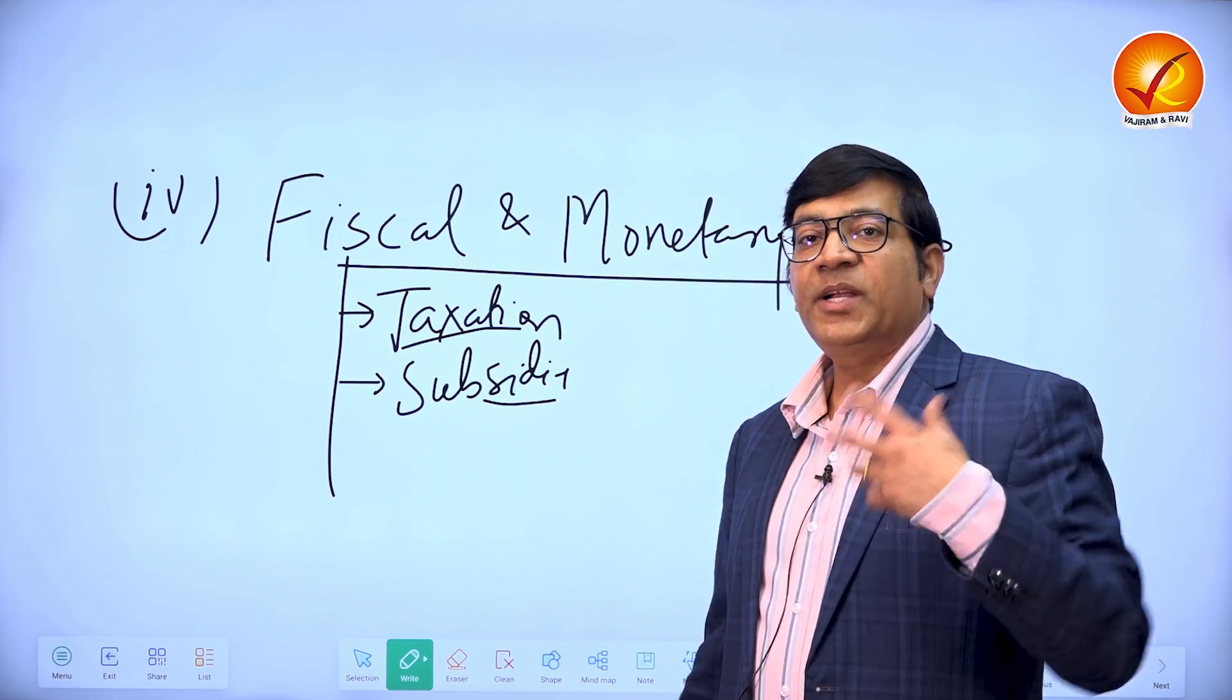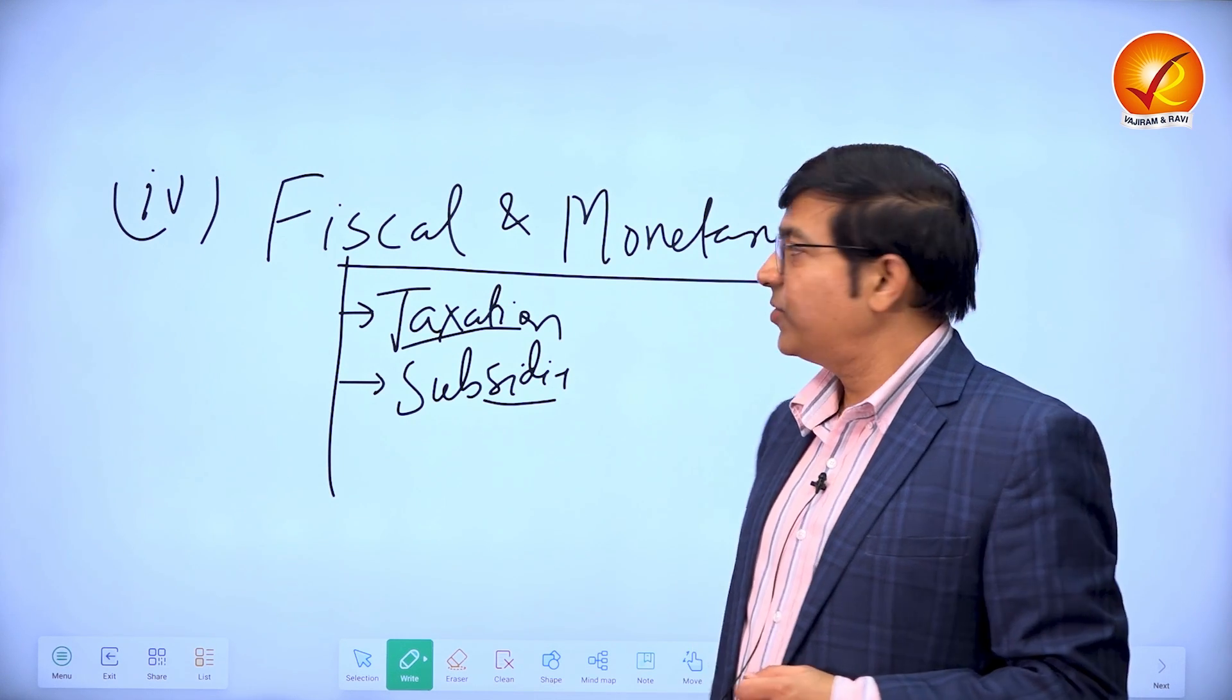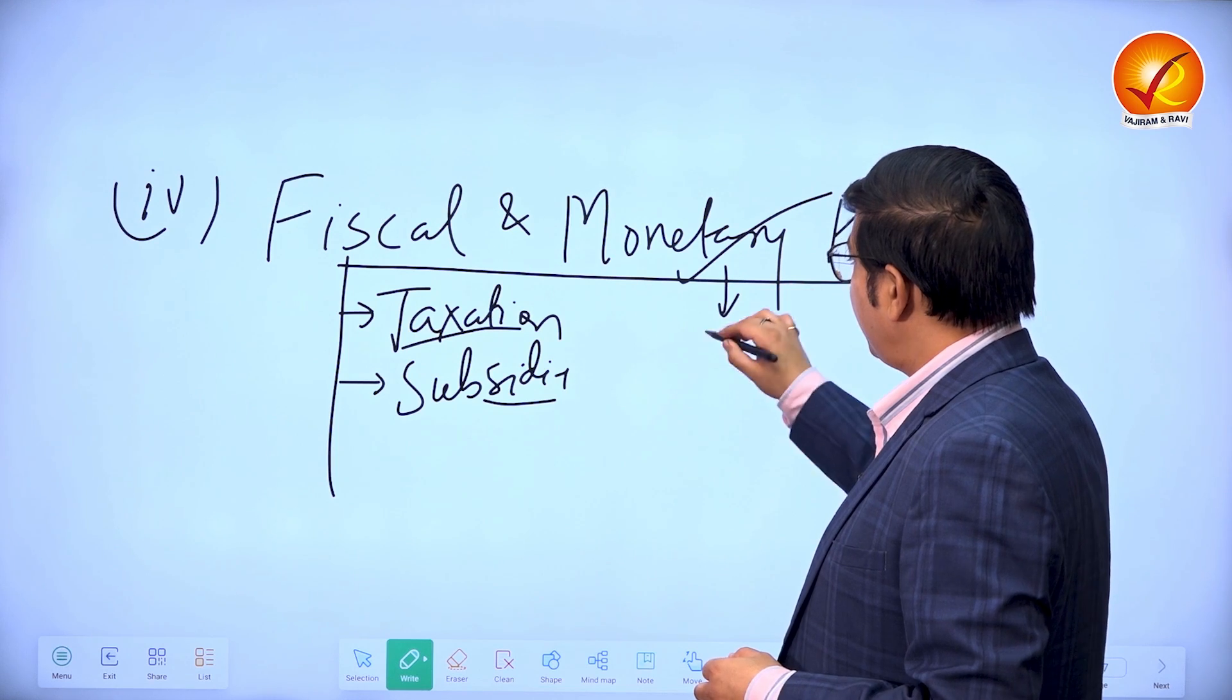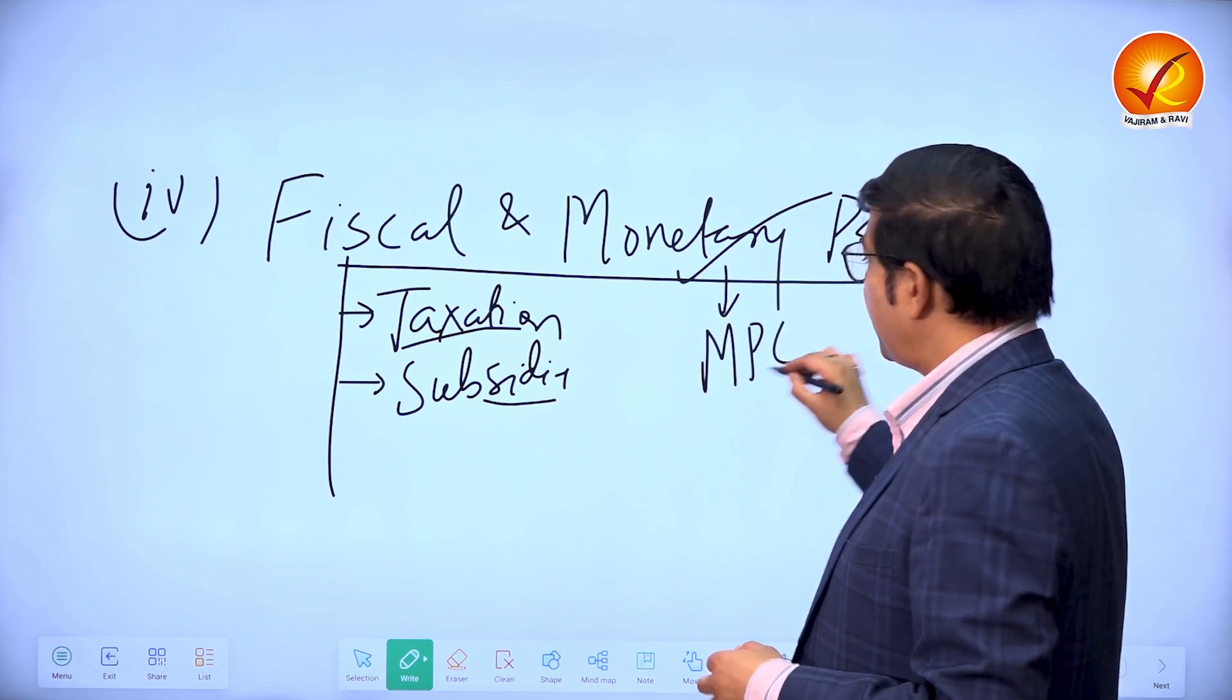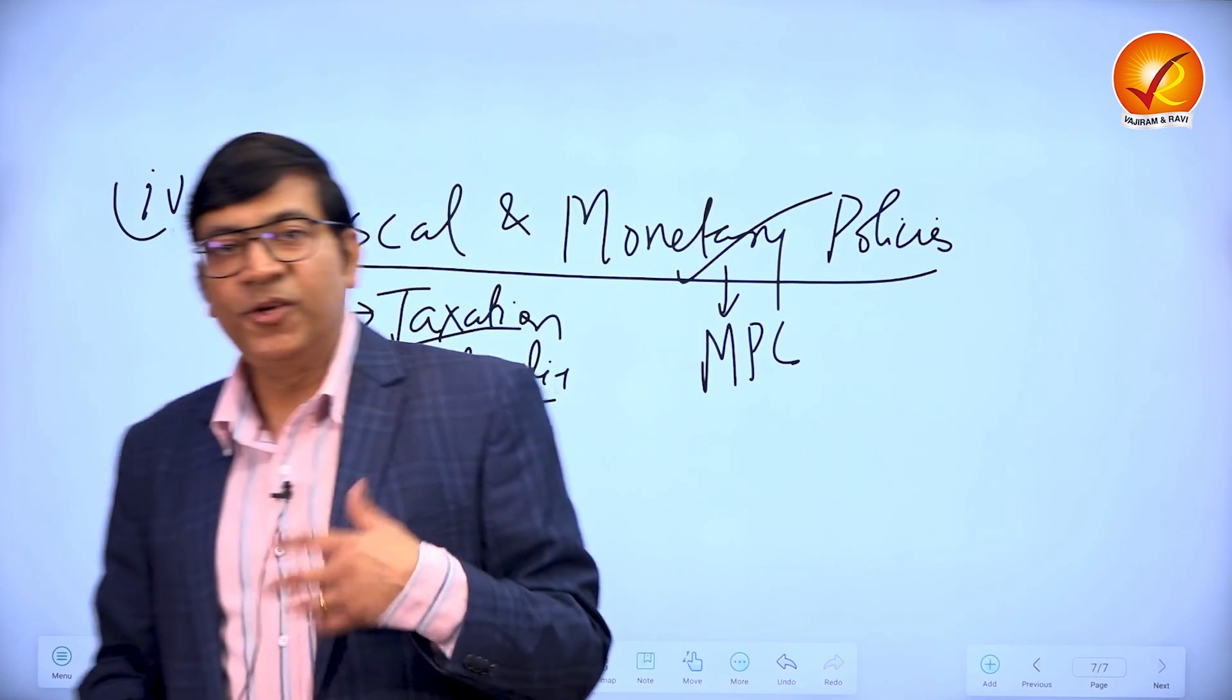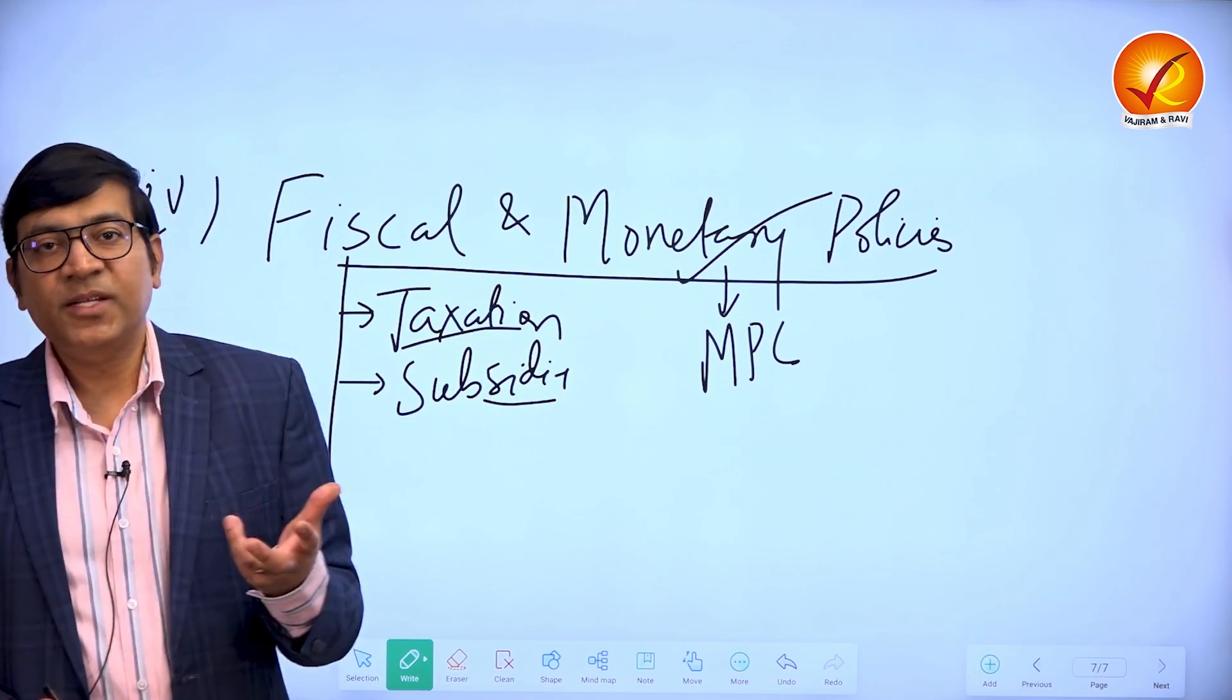Like government can give tax relaxation to those sectors which can potentially contribute more to GDP, or subsidies depending upon how they are contributing to the GDP. In monetary policy, the MPC, the Monetary Policy Committee within which the RBI has the main role, they can ensure that loans are cheaper for the productive sectors.